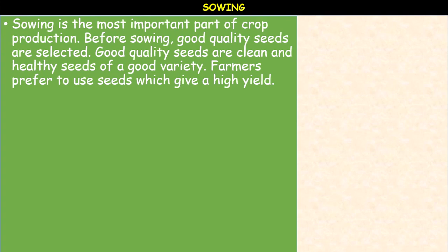Sowing is the process of putting seeds in the soil. It is the most important part of crop production. Before sowing, good quality seeds are selected — clean and healthy seeds of a good variety. The yield of the crop depends upon the seed selected by the farmer. Farmers prefer to use seeds which give a high yield.